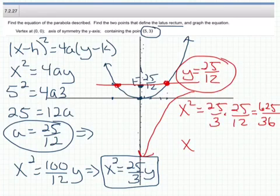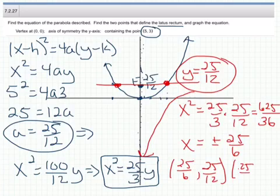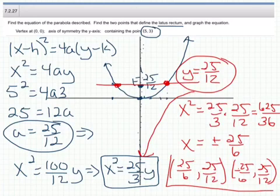That means that x itself is equal to plus or minus 25 over 6. So I have the two red dots, two red ordered pairs: x equals 25 over 6 comma 25 twelfths, and the negative, negative 25 over 6 and 25 twelfths. And these are the two ordered pairs that are on the parabola and define the latus rectum.